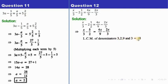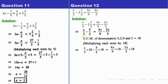The LCM of the denominators — 3, 2, 9, and 3 — turns out to be 18. As I told you, after finding the LCM you will multiply each term by the LCM. So I am going to multiply each term by 18. Multiplying each term by 18 we get: x/3 into 18, 5/2 into 18, 4x/9 into 18, and 2x/3 into 18. Now let us see the cancellations. 3 and 18 cancel — giving 6x.